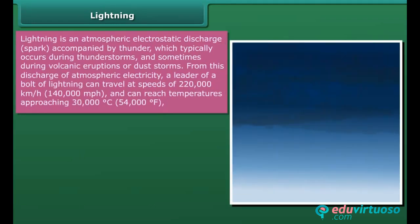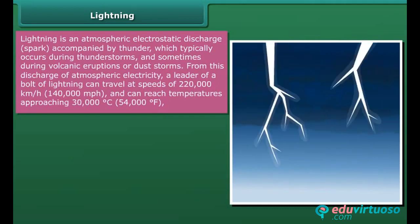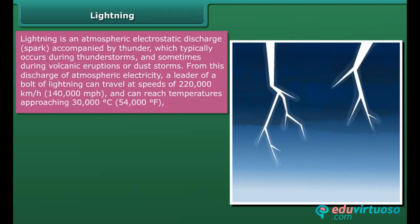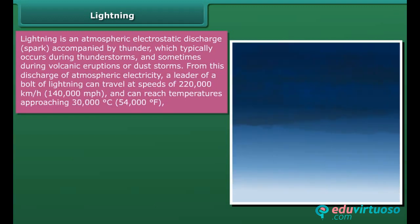Lightning is an atmospheric electrostatic discharge spark accompanied by thunder, which typically occurs during thunderstorms and sometimes during volcanic eruptions or dust storms. A leader of a bolt of lightning can travel at speeds of 220,000 km per hour and can reach temperatures approaching 30,000 degrees Celsius, that is 54,000 degrees Fahrenheit.